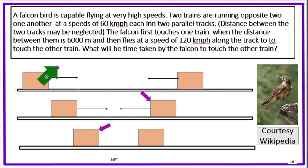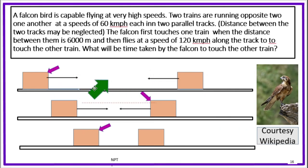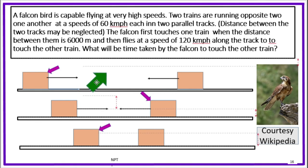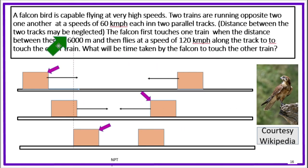Now, there are two trains moving in opposite directions, each with speed of 60 km per hour, on two parallel tracks. The distance between the two tracks may be neglected. A Falcon bird starts flying between the two trains when they are 6 km apart, flying at 120 km per hour.